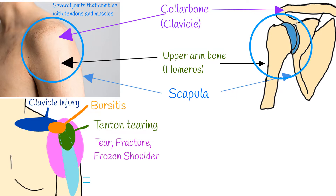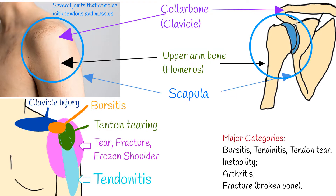Most shoulder problems fall into four major categories: tendon inflammation, also called bursitis or tendonitis, or tendon tear; instability; arthritis; and fracture, or broken bone.